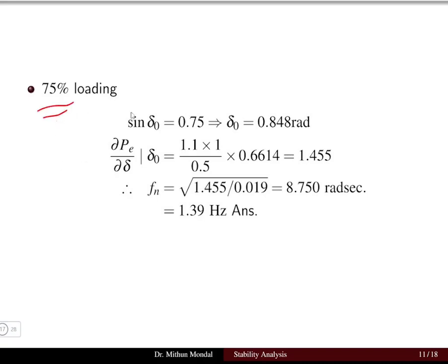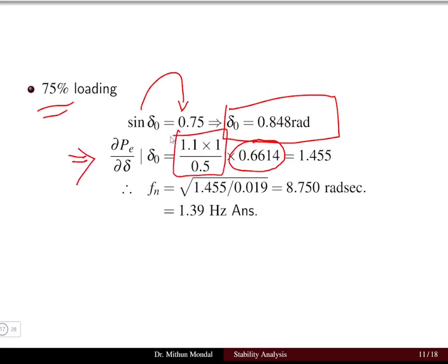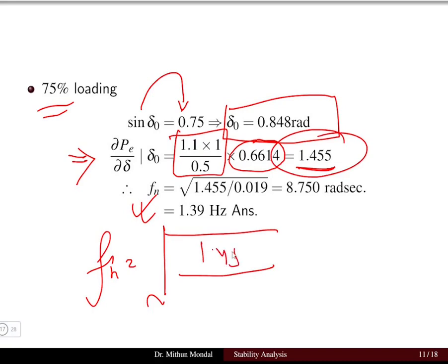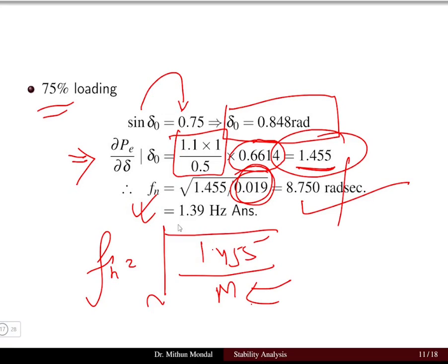For 75 percent loading: sin δ₀ = 0.75, so cos δ₀ is calculated accordingly. Substituting into dPe/dδ = (1.1 / 0.5) × cos δ₀ gives 1.455. Using the same M = 0.019, the natural frequency = √(1.455 / 0.019) = 8.75 radians per second, which equals 1.39 Hz. Thus at different loading levels, the natural frequency of oscillation changes.